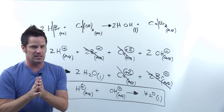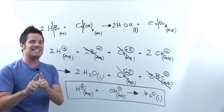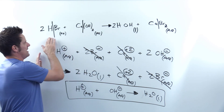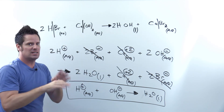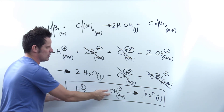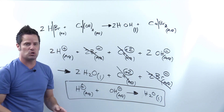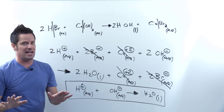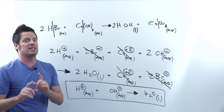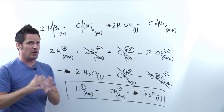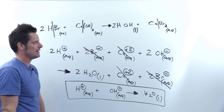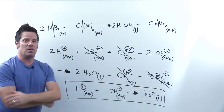One important point: do not naively assume that every time you react a strong acid with a strong hydroxide base, the net ionic equation always comes out to simply H⁺ + OH⁻ → H₂O. That's not always the case. In order to get the correct answer every single time, you need to go through the full process correctly as I've just outlined.